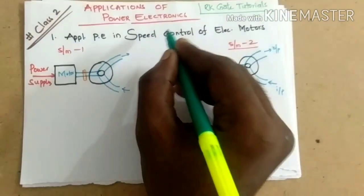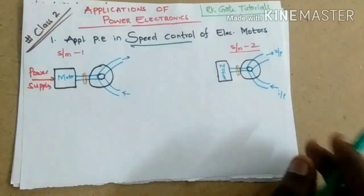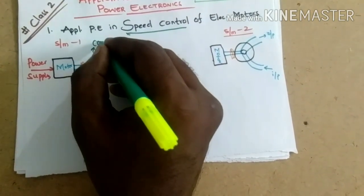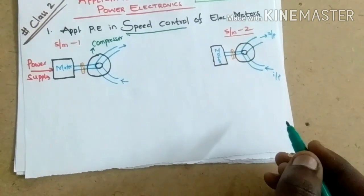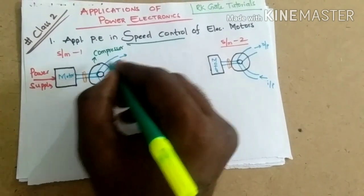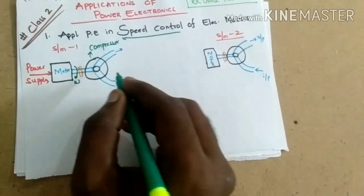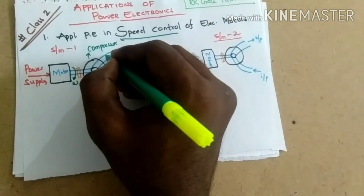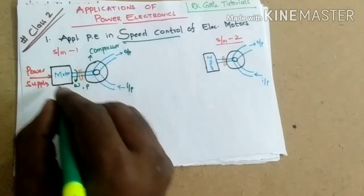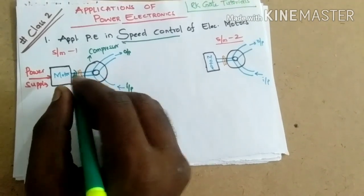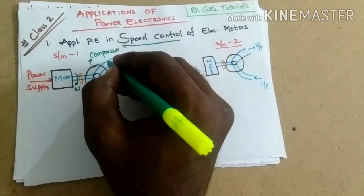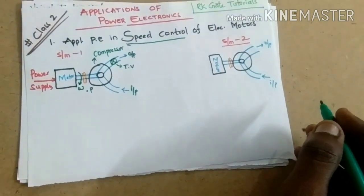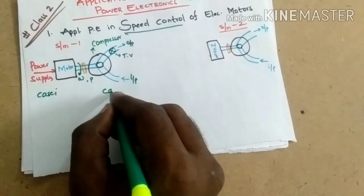Let us see how speed control is done. I have two systems here. This is an electrical motor which is fed to a compressor or pump — these two are mechanically coupled. The motor experiences a speed of omega and drives a power P. There is no mechanism for adjustment of speed or power, but we need some adjustment at the output. That is why we use a throttling valve here for output control. Let us analyze two cases: case one and case two.